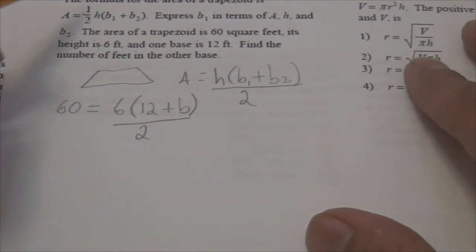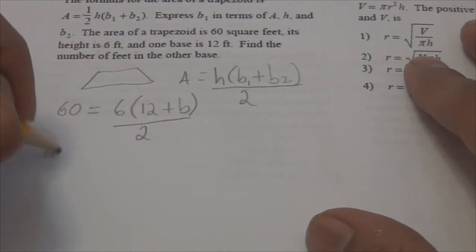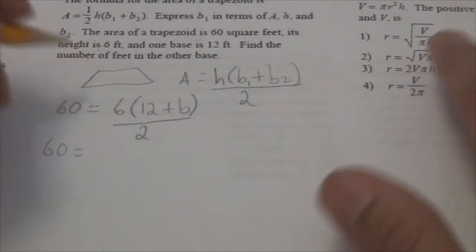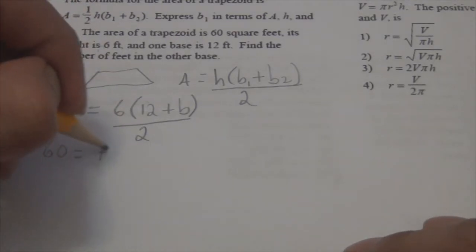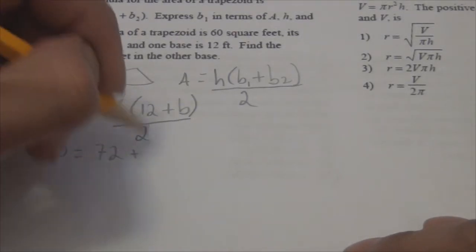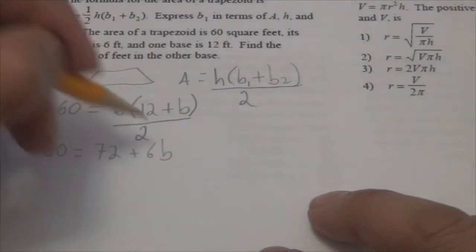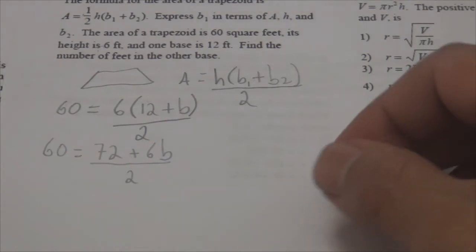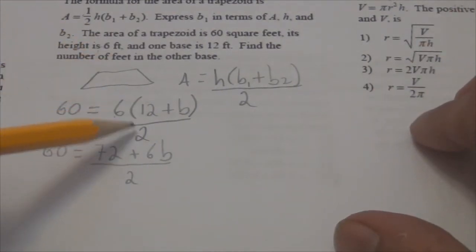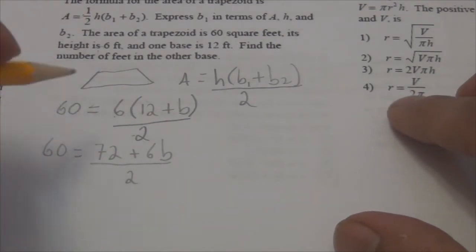Do I have the distributive property? Yes. So I'm going to get 60 equals: 6 times 12 is 72, so that's 72 plus 6B, all over 2. Now do I have fractions? Yes. So multiply by the common denominator, which is 2. These twos cancel out. 2 times 60 is 120.